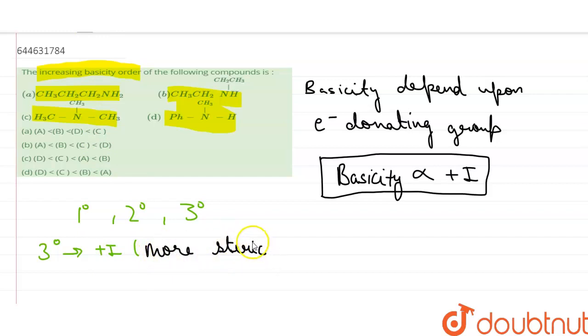Steric hindrance, which will not allow nitrogen electrons to donate, therefore decreases basicity.